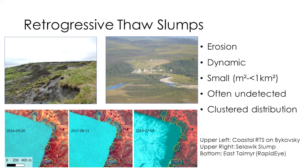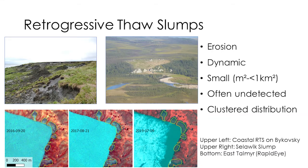Although we are at a Permafrost conference and I'm pretty sure you know what retrogressive thaw slumps are, I would still like to give you a short introduction. They are typically erosion features found especially in very ice-rich permafrost, especially in formerly glaciated terrain. It's a typical mass wasting process with strong implications on local to regional aquatic ecology, hydrology, and biogeochemical cycles including the carbon cycle. We see an example here on the top left from the Batagaika Peninsula — a nice coastal thaw slump.